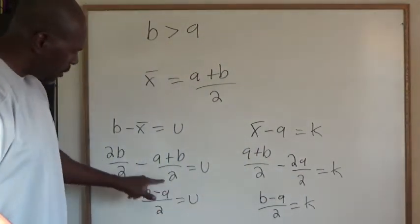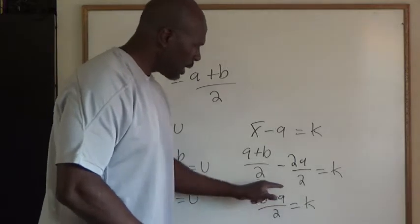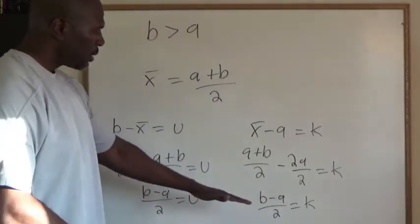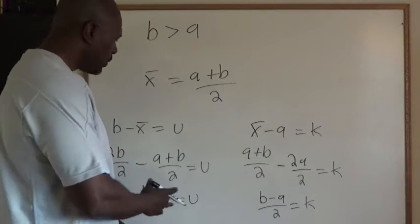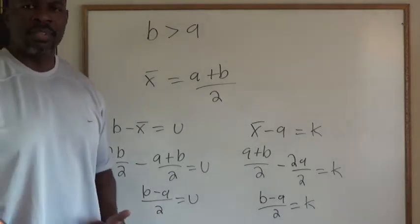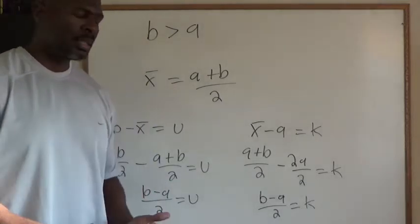So U is B minus A over 2, K is B minus A over 2. So we have shown that the difference of the two numbers from the average is exactly the same.